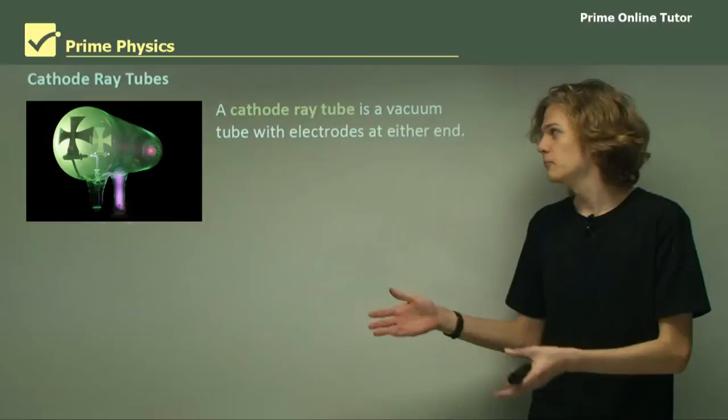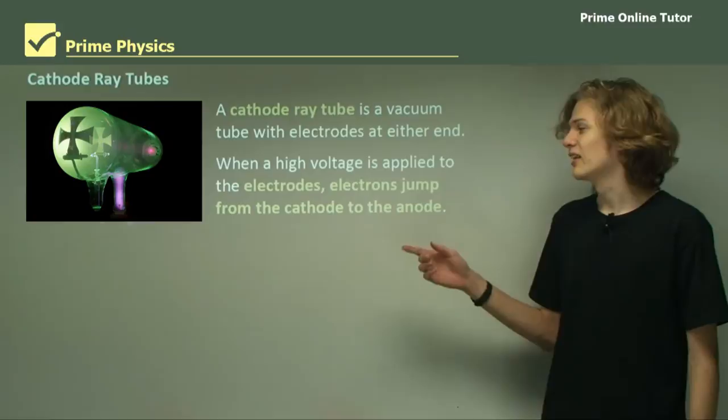Now a cathode ray tube is simply a vacuum tube, that is a glass tube with all the air taken out with electrodes at either end.